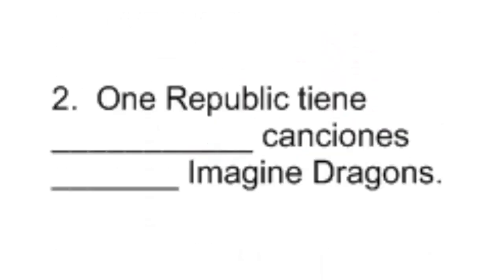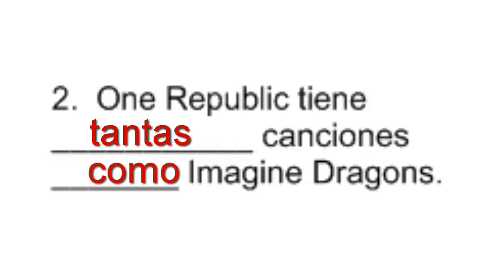Next: One Republic tiene _____ canciones _____ Imagine Dragons. Again we have a noun in between — we're comparing songs between two bands. Since canciones is feminine plural, we use tantas. One Republic tiene tantas canciones como Imagine Dragons. I don't know if that's factual — it's just an example.